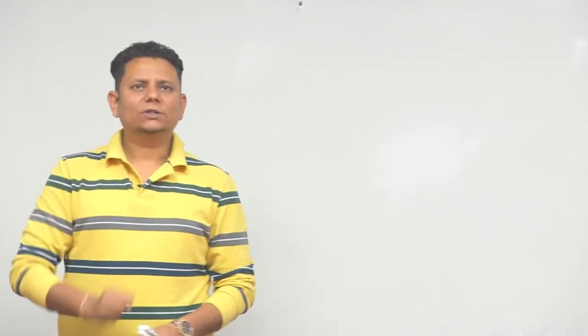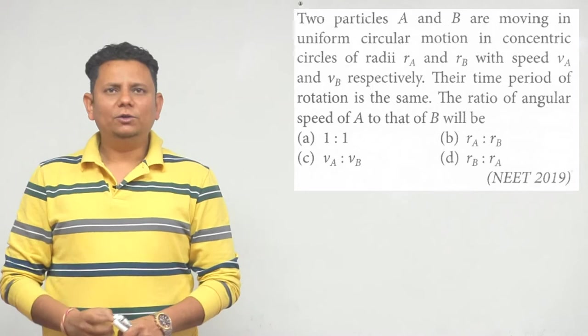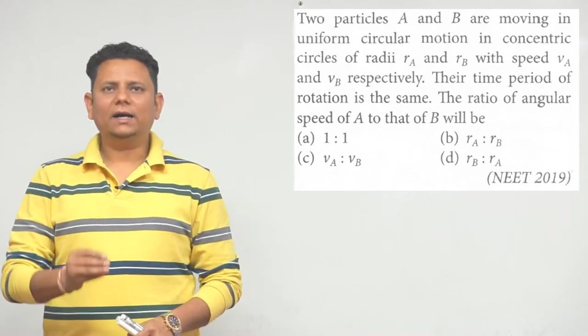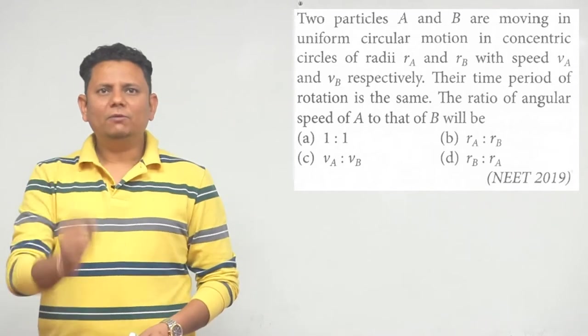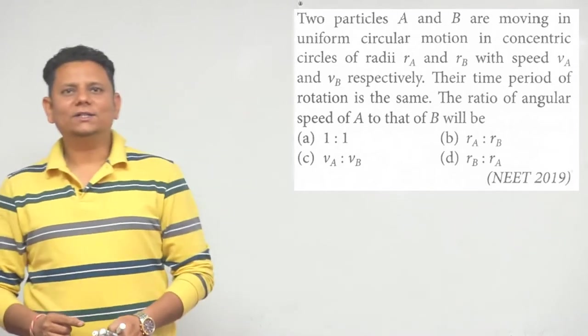Next question. This question is from the exam of NEET 2019. Two particles A and B are moving in uniform circular motion in concentric circles of radii RA and RB with speed VA and VB respectively. Their time period of rotation is the same.